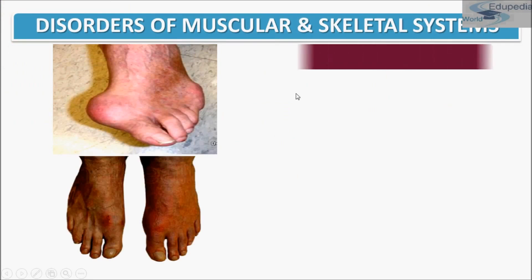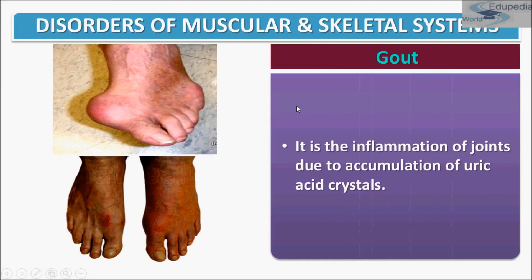Another disorder is gout. Gout is a form of arthritis because it involves inflammation of a joint. It is a disease in which defective metabolism of uric acid causes arthritis, especially in the smaller bones of the feet. Uric acid gets accumulated there, and because of the deposition of chalk stones, gout arthritis takes place. It can cause an attack of sudden burning pain, stiffness, and swelling in a joint — usually in the big toe. These attacks can happen over and over unless gout is treated.